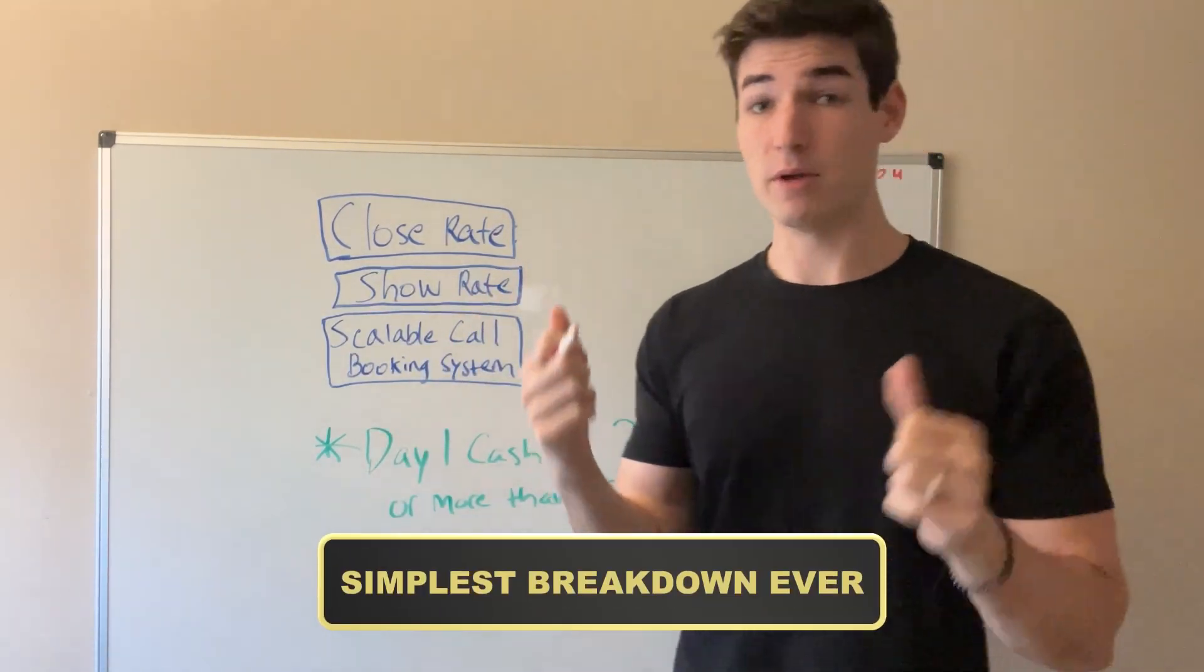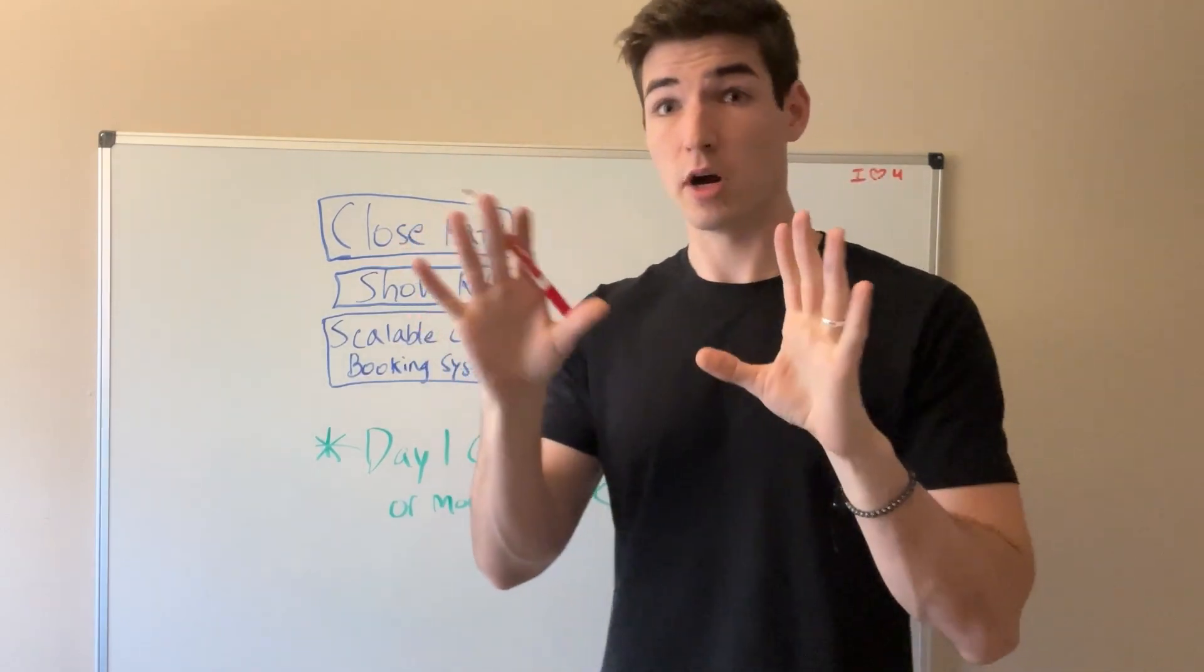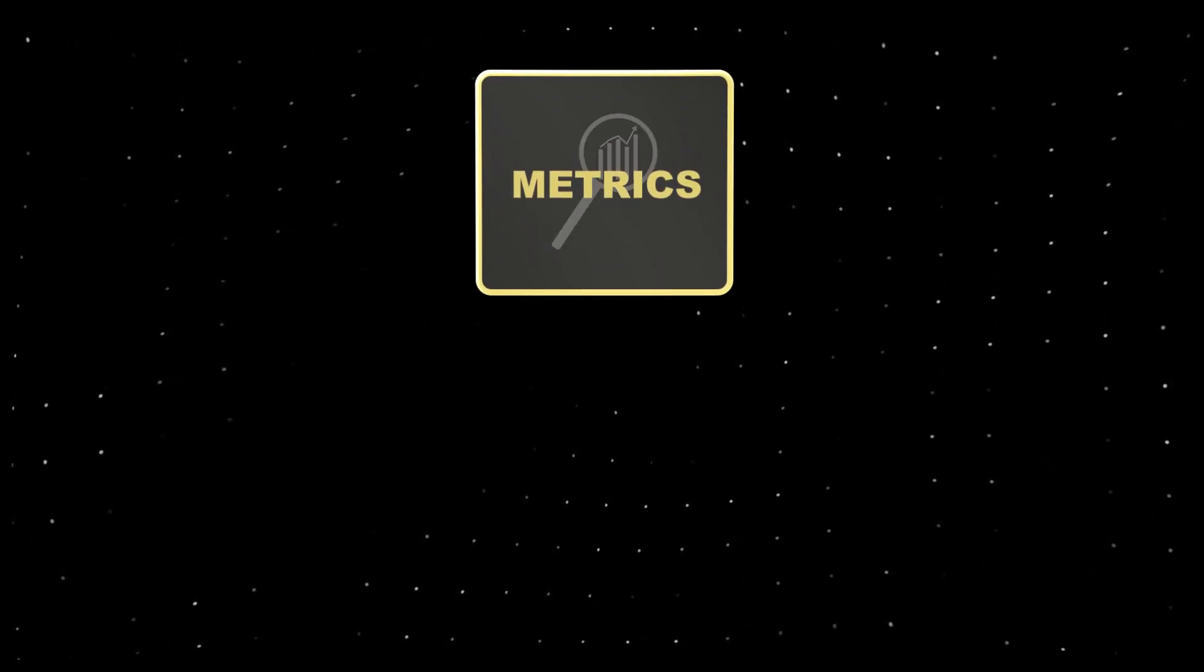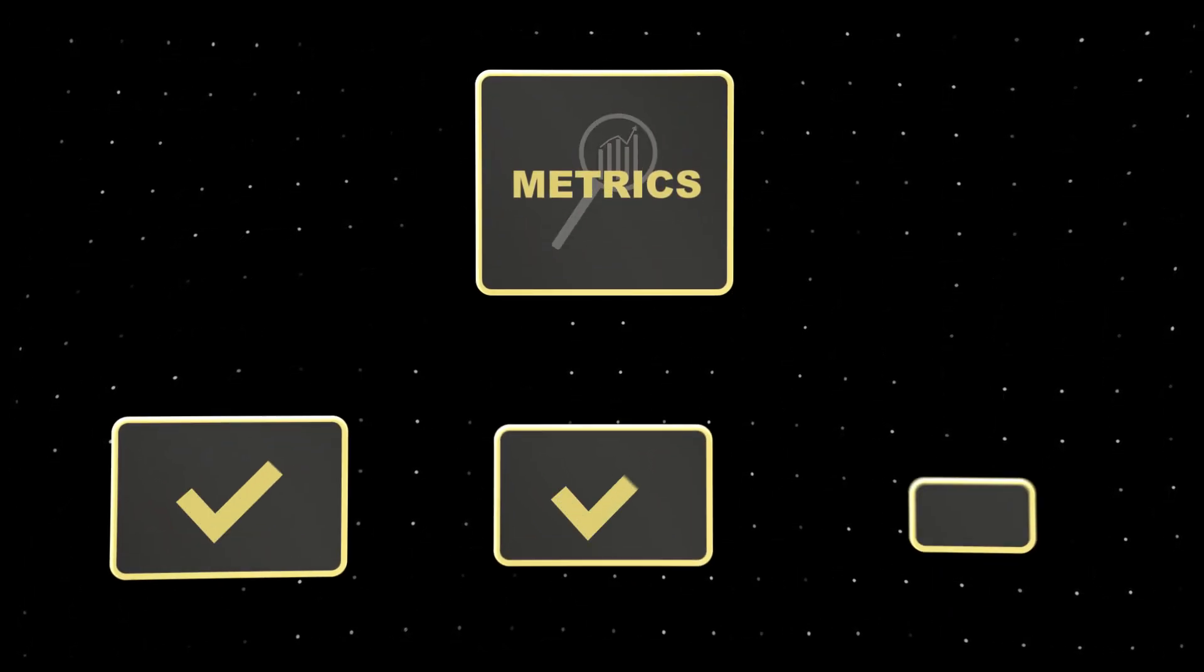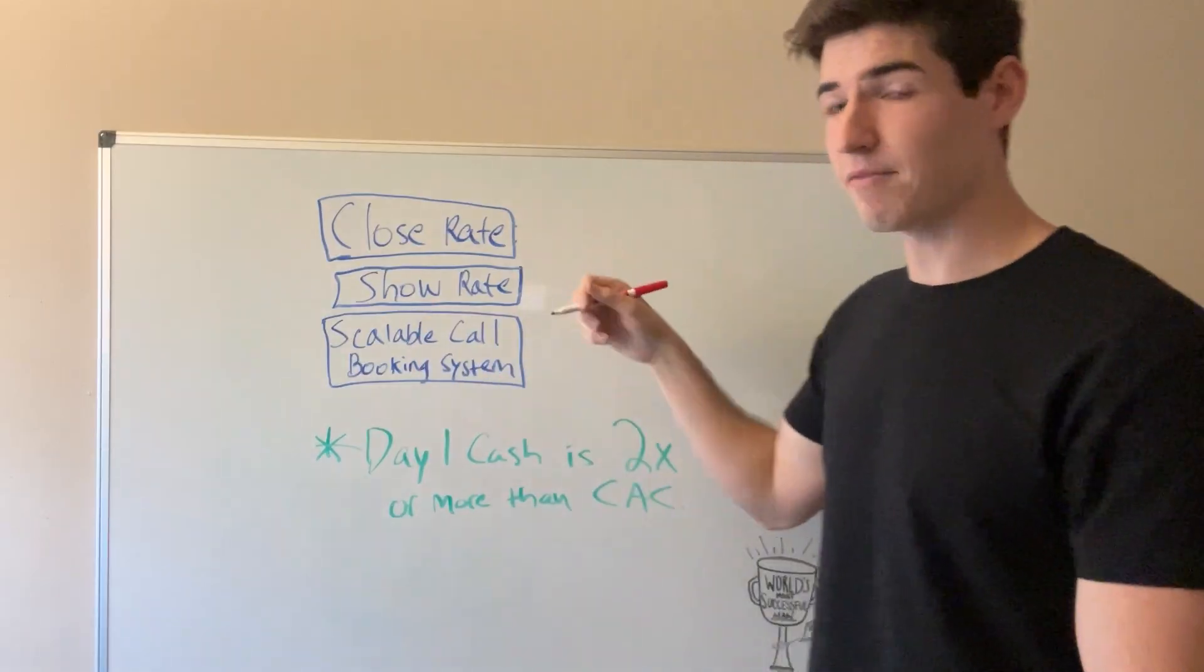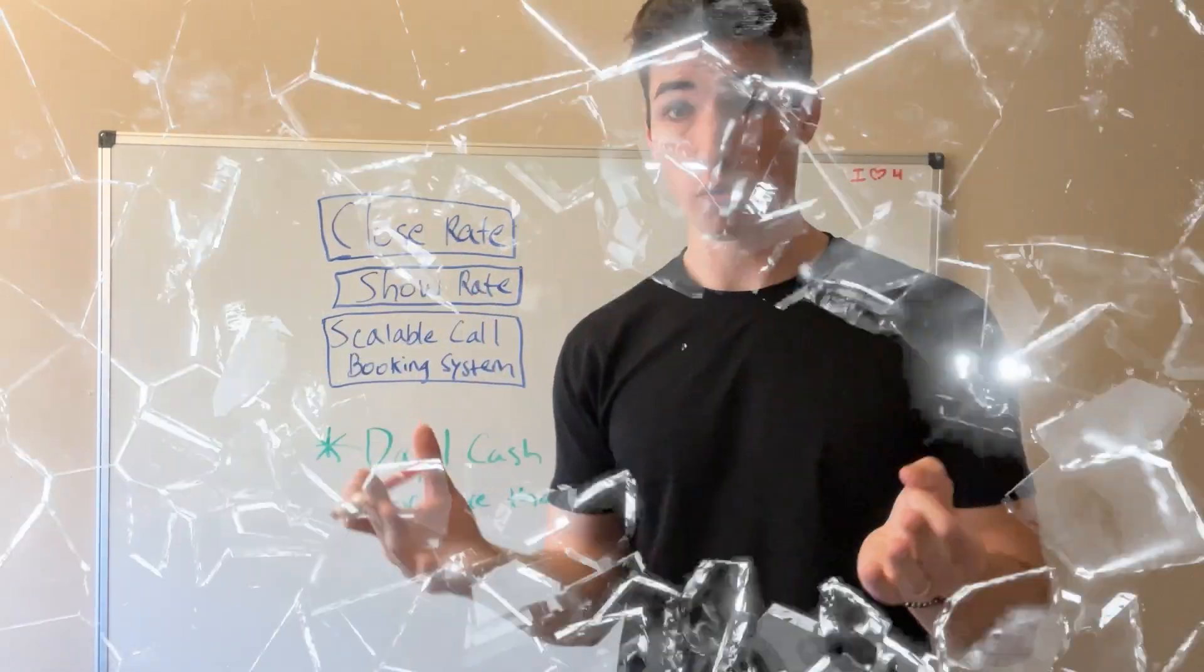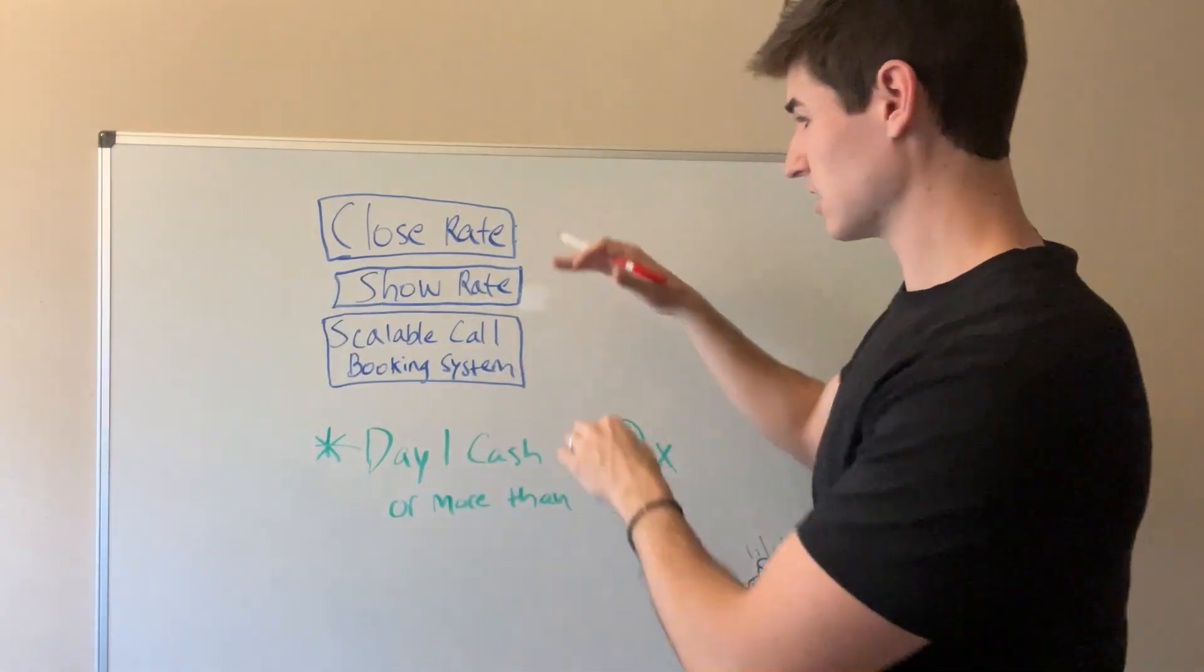We're going to break down literally two things. This is the simplest breakdown. If you do this, things are really going to simplify for you and you'll understand exactly how to scale your business. First thing is we have these series of metrics or conditions in your business that you need to tick off. If you don't have this, you can't scale because the acquisition system is broken. I'm specifically only going to be talking about client acquisition here.